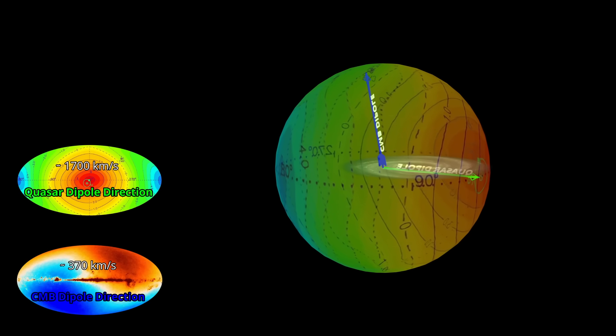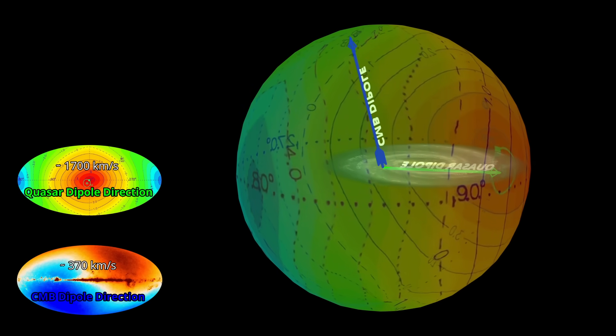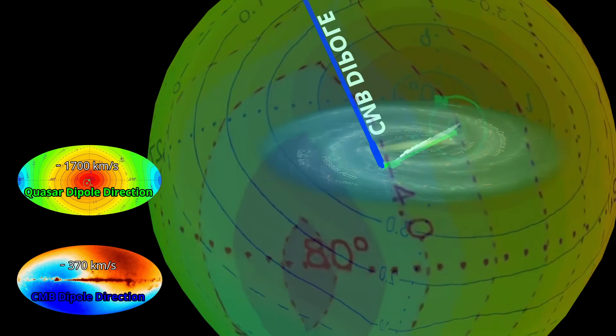Two compasses, two directions. The real question is not how fast we're moving, but what the CMB actually is.